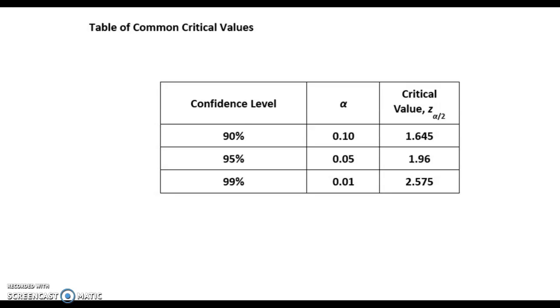You can see here in the table for a 90% confidence level, alpha is 0.10. But the critical value of Z alpha over two is 1.645. So we're going to fill in 1.645 in our equation.